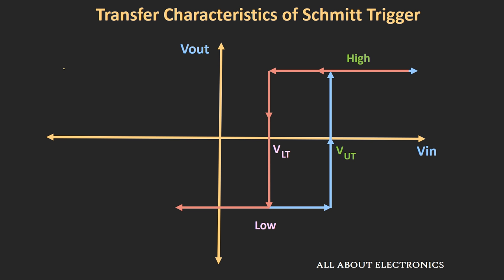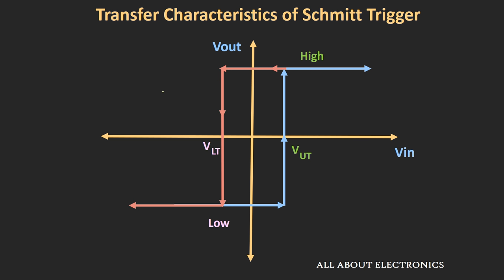This transfer characteristic is also known as the hysteresis curve for the Schmitt trigger. If the output voltage levels VH and VL are equal and opposite in polarity, the transfer characteristic curve will be symmetric with respect to the y-axis. By providing a reference voltage as input to this Schmitt trigger, we can shift this curve either to the right or left. This kind of transfer characteristic curve describes the non-inverting Schmitt trigger, because once the input crosses the upper threshold voltage the output becomes high, and when the input is less than the lower threshold voltage the output becomes low.